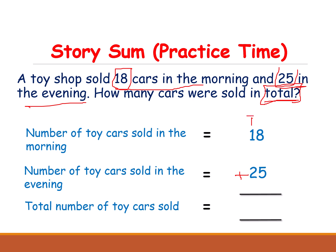In the ones place we have 8 and 5. 8 is bigger than 5. Keep 8 in your mind and open 5 fingers. After 8: 9, 10, 11, 12, 13. We got 13. Now write 1 on top of the tens place and 3 goes down to the ones place.